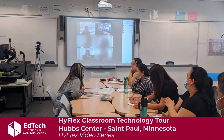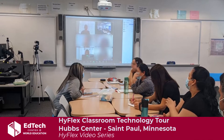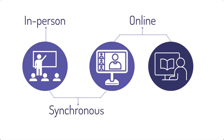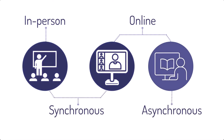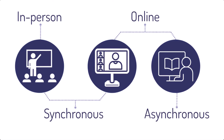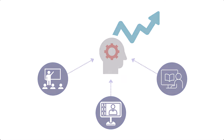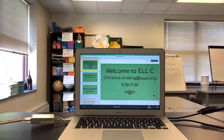HiFlex is a model that allows learners to choose whether to attend classes in person or online, in a synchronous class with a teacher, or by doing asynchronous activities. Regardless of what format learners choose, it's important that the learning activities all lead to equivalent learning outcomes. Let's look at the technology that one adult education program uses in its HiFlex class.